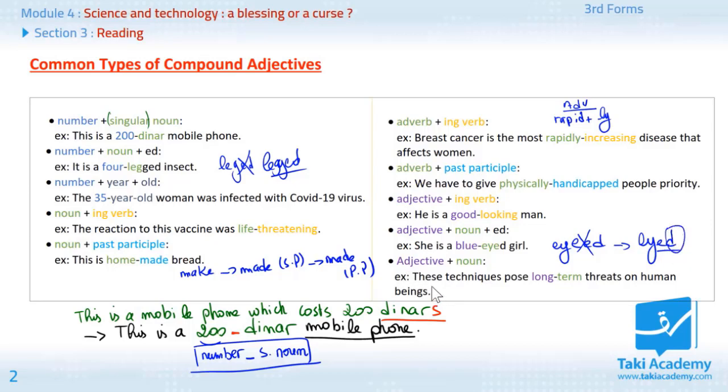Next one, which is the last one. Adjective plus noun. Example. These techniques pose long term threats on human beings. Here, to describe threats, these are long, an adjective, and term, threats.